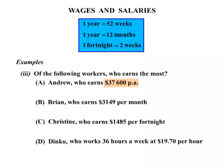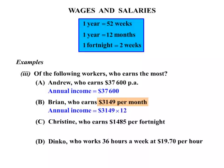We'll work out the annual income for all four so we can compare properly. Andrew's annual income is straightforward: $37,600. Brian is getting $3,149 per month, and there are 12 months in the year, so we multiply by 12. That works out to be $37,788.